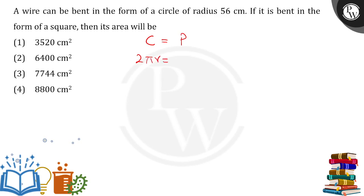For the perimeter of a square, the formula is 4a, where a is the side length. The radius r is known, but a is unknown — once I calculate a, I can find the area. Setting them equal: 2 × (22/7) × 56 = 4 × a.